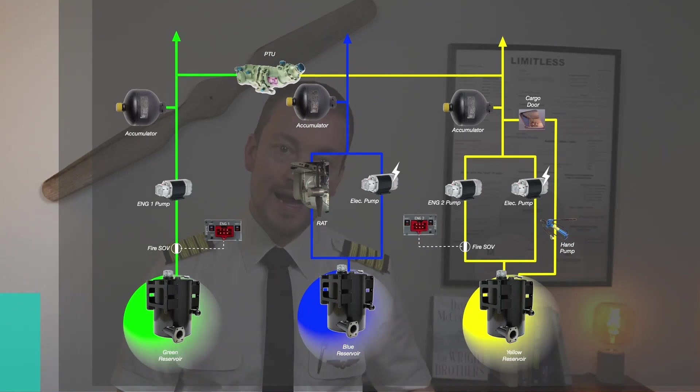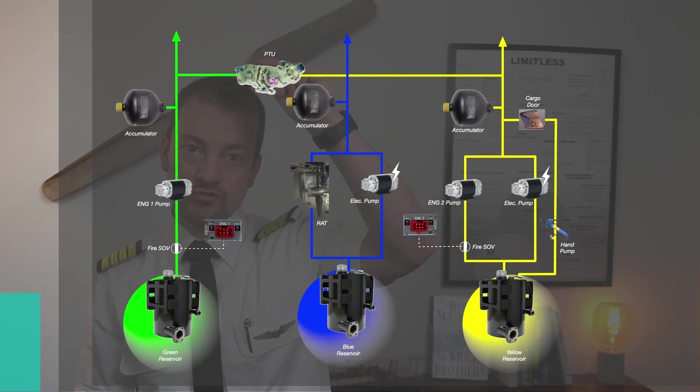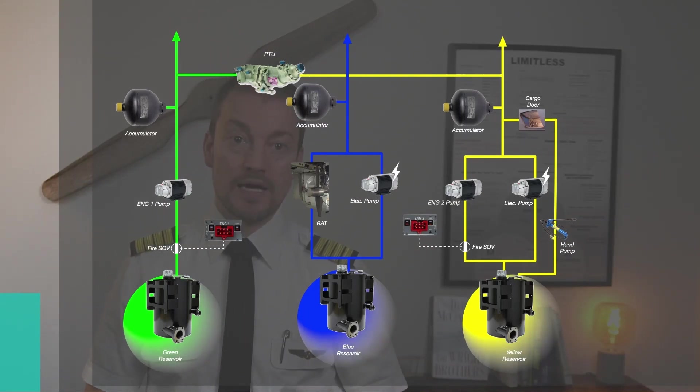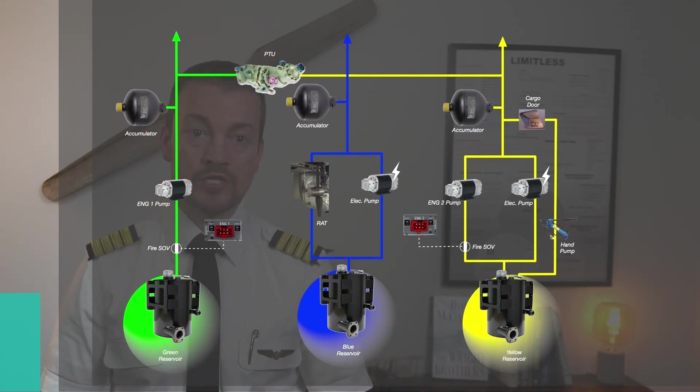To drive the yellow side here as a motor, which then drives the other side, on the green side, as a pump. And that pump is as effective in creating pressure as the engine driven pump was, bringing it up to 3000 PSI.